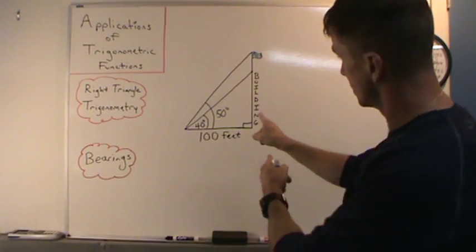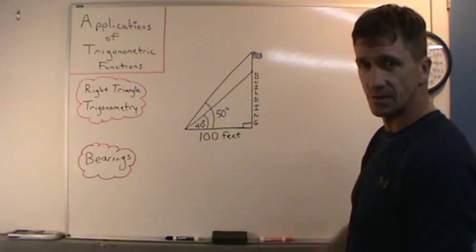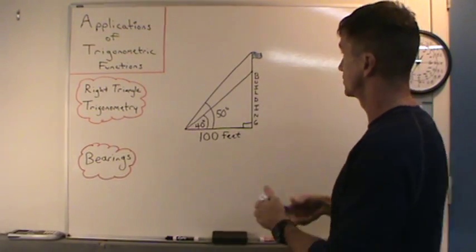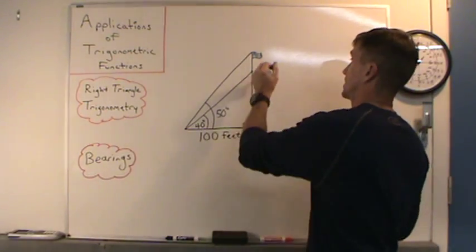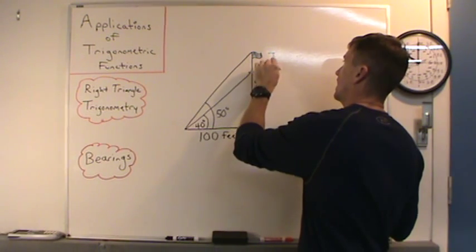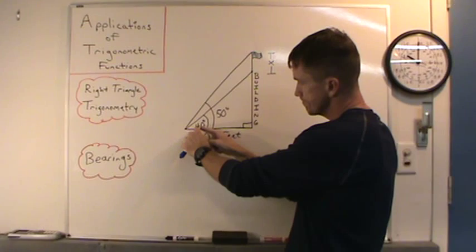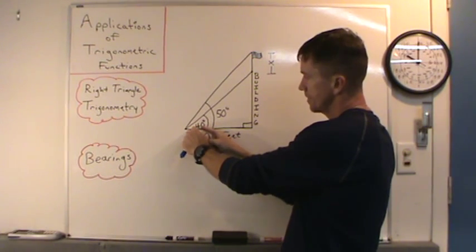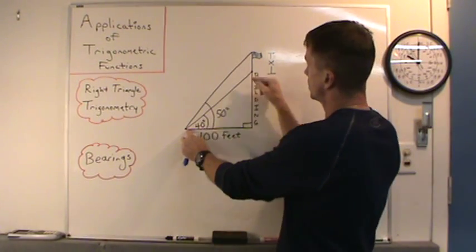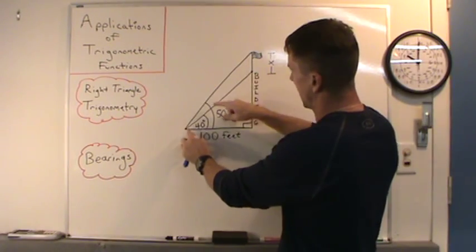I want to start with this problem right here. There's a flag on top of a building and with the given information we have to find the height of this flag. I'm just gonna call the height of this flag x. We're given these angles: the angle of elevation from a point 100 feet from the base of this building to the bottom of the flag is 40 degrees. The angle of elevation from this point to the top of the flag is 50 degrees.